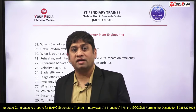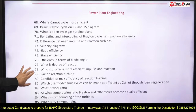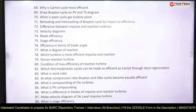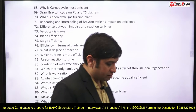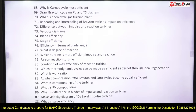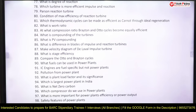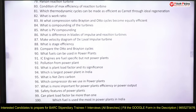Why is the Carnot cycle the most efficient? What do you mean by internal reversibility and external reversibility? Draw the Brayton cycle on PV and TS diagrams. What is open cycle gas turbine? Explain reheating and intercooling in the Brayton cycle and their impact on efficiency. Can you tell the difference between impulse and reaction turbines? Draw the velocity diagrams of these turbines — Parsons reaction turbine and De Laval impulse turbine. What are the stage efficiency, blade efficiency, and various efficiencies in the turbine? What is blade angle and degree of reaction?